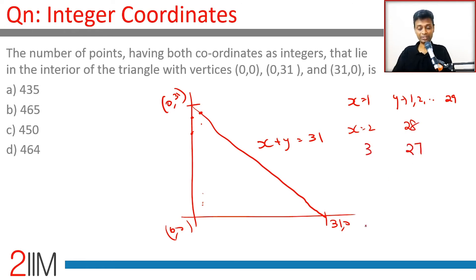For x equals 3, 27 points. x plus y should be less than 31, and x and y both are positive. How many possibilities exist?